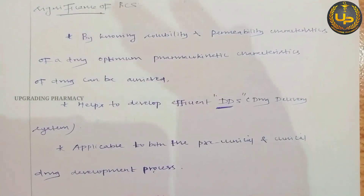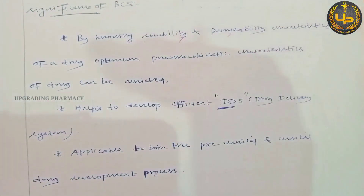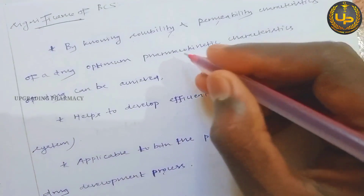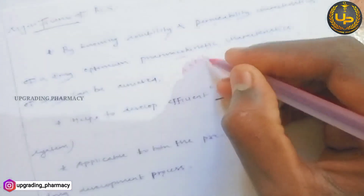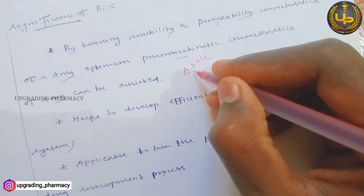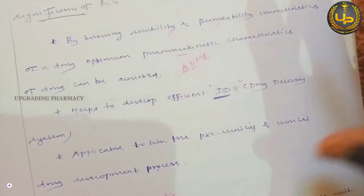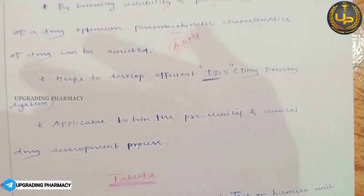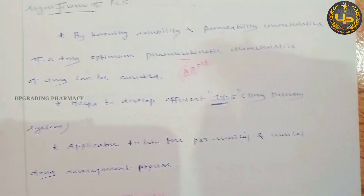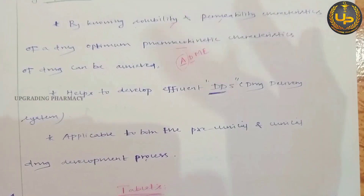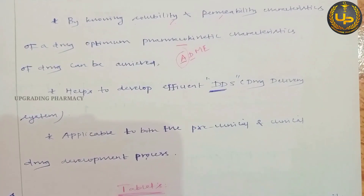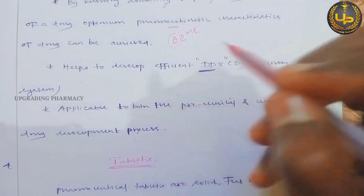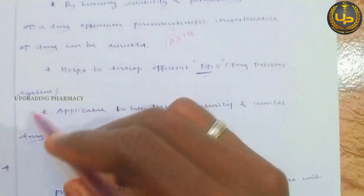Regarding the significance of BCS classification: by knowing the solubility and permeability characteristics of a drug, the optimum pharmacokinetic characteristics — absorption, distribution, metabolism, and excretion (ADME) — can be achieved. Knowing solubility and permeability helps us define and predict the pharmacokinetic characteristics of a particular drug.